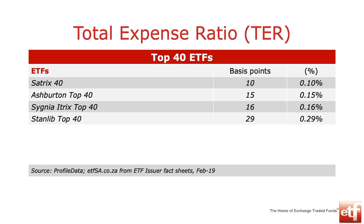Looking at our best-known and broadest-based ETFs in the market, we've got four different ETFs that track the Top 40 Index. Satrix 40 at 10 basis points — 0.1% total expense ratio — Ashburton at 15, Signia Itrix at 16, and Standlib at 29 basis points. They give you exactly the same underlying investment exposure, and yet one is almost three times as expensive from a total expense ratio perspective as the cheapest one. Now you can start comparing apples with apples.